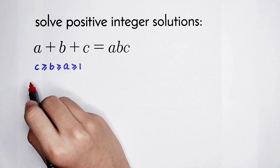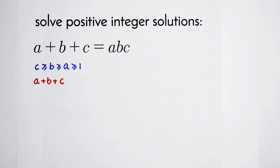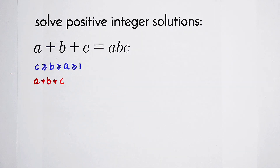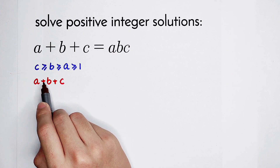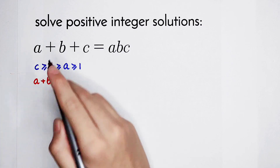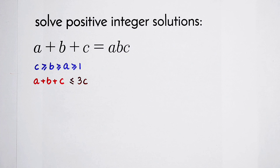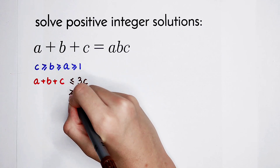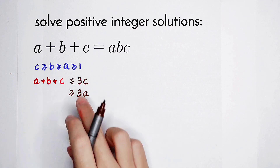...I'm going to derive an inequality. For A plus B plus C: since C is the largest and A is the smallest, we have two directions. First, A ≤ C and B ≤ C, so A plus B plus C is less than or equal to C plus C plus C, which is 3C. Second, B ≥ A and C ≥ A, so A plus B plus C is greater or equal to 3A.